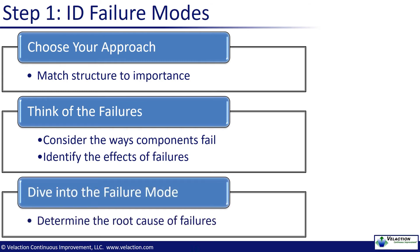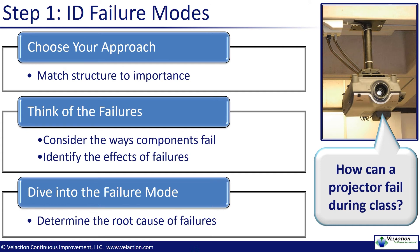One of the more time-consuming parts of identifying failure modes is figuring out the root causes. You have to understand the root cause of the problem to make a good assessment as you start applying scores. For example, consider doing an FMEA on the ways a projector can fail during a presentation. You might consider things like the bulb burning out, breaking the bulb during transit, forgetting a power cord, or even theft. You probably would not worry too much about earthquakes, floods, or intentional damage through vandalism. An FMEA is a lengthy process — don't make it unbearably so.